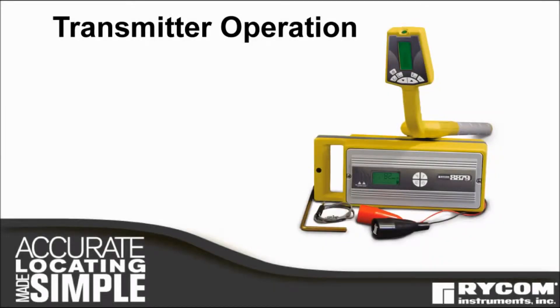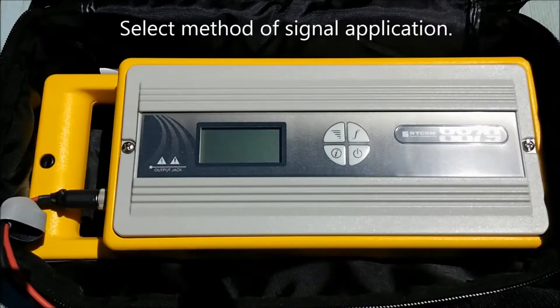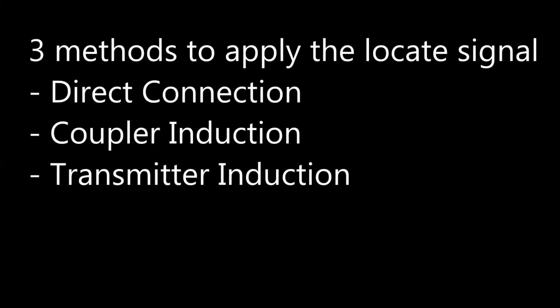To operate the transmitter, first select a method of signal application. There are three methods to apply the locate signal: direct connection, coupler induction, and transmitter induction.